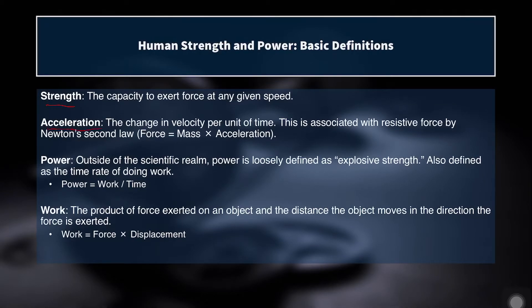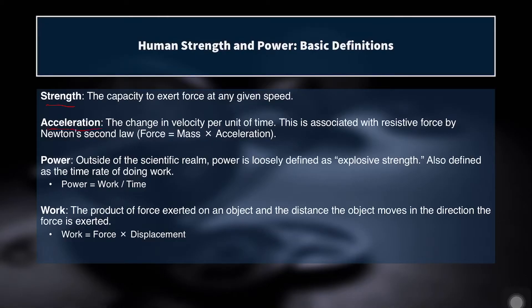Acceleration is the change in velocity per unit of time, and this is associated with resistive force by Newton's second law: force equals mass times acceleration. Because force equals mass times acceleration, we know that if strength is the ability to produce force, then the amount that we can accelerate the object we are moving will depend on that object's mass. A very massive object is going to be hard to accelerate, while a very light object can be accelerated very quickly because it doesn't require quite as much force.